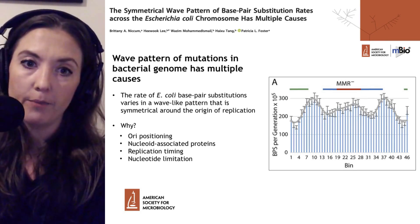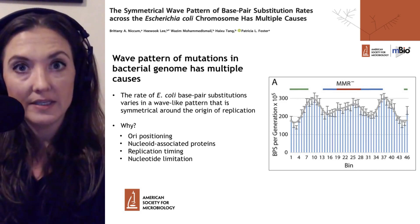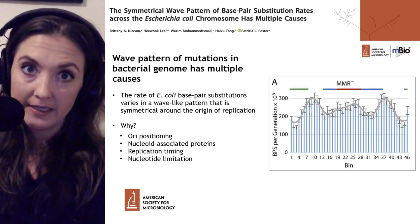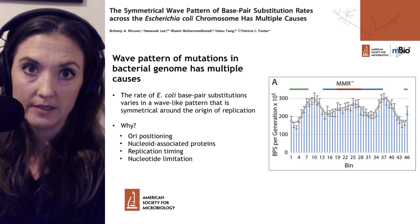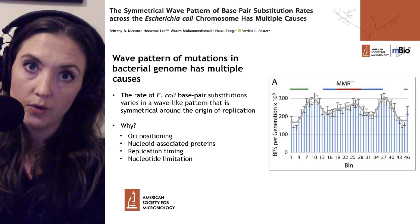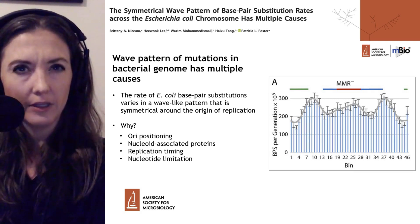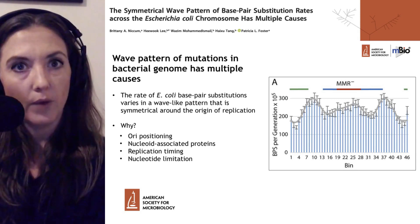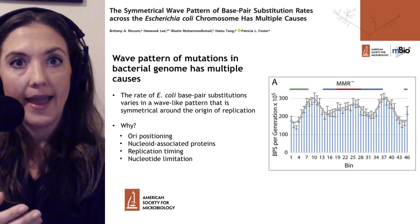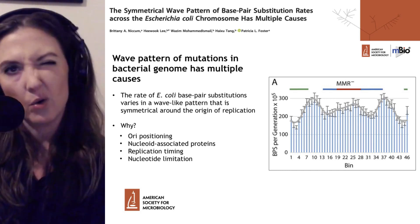This research group wanted to investigate why, and they posed several hypotheses: that the ORI positioning influences the base pair substitution rate; that nucleoid-associated proteins, which bind the DNA and help maintain its supercoiled structure, may influence this rate; and that the substitution rate could also be influenced by replication timing and nucleotide limitation — particularly during periods of rapid growth where the ORI is constantly firing, requiring a lot of nucleotides and potentially leading to the incorporation of the wrong one.